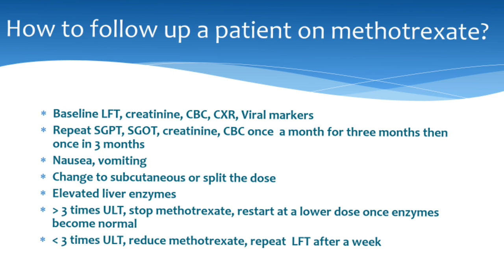If nausea or vomiting occurs, change to subcutaneous or split the dose. If liver enzymes are elevated more than three times the upper limit of normal, stop methotrexate and restart at a lower dose once enzymes normalize. If elevation is less than three times the upper limit — for example, SGPT going from 40 to 70 units — you don't have to stop; just reduce from 15 mg to 12.5 mg, repeat LFT after a week, and follow up.